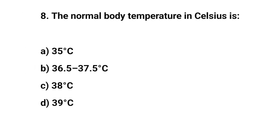Question No. 8. The normal body temperature in Celsius is? The right answer is B: 36.5 to 37.5 degrees centigrade.